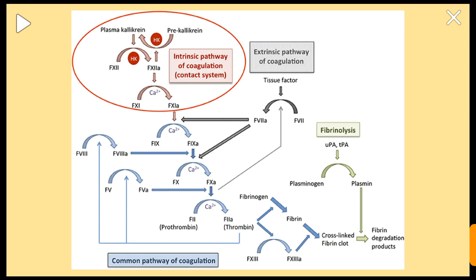The coagulation pathway consists of the intrinsic and extrinsic pathways, which contain different clotting factors. The common pathway begins from Factor Xa; when activated it forms prothrombin, and from prothrombin, thrombin is formed, which converts fibrinogen into fibrin and Factor XIII into activated Factor XIII.